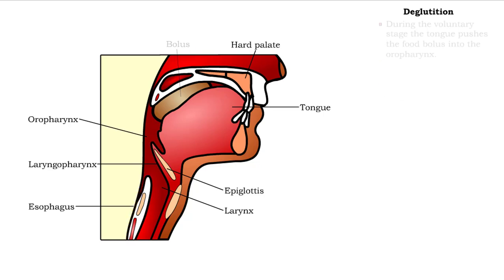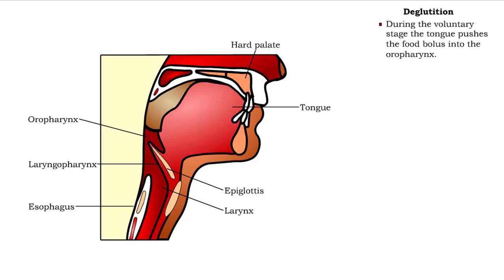During the voluntary stage, the tongue pushes the food bolus into the oropharynx.